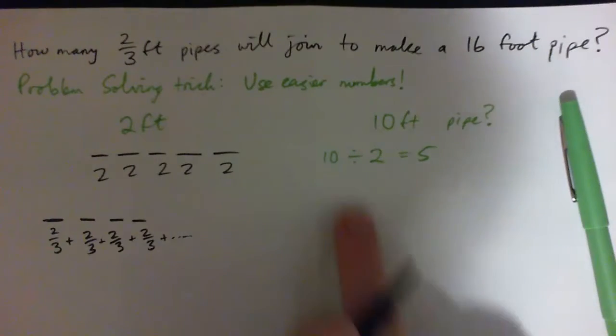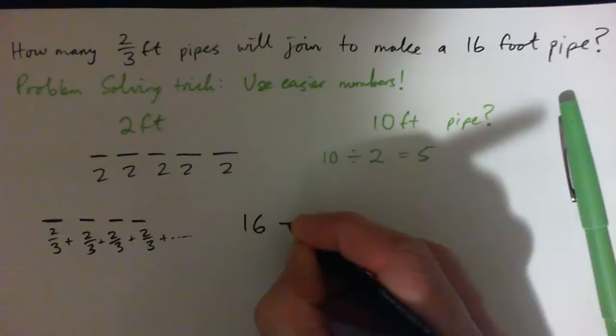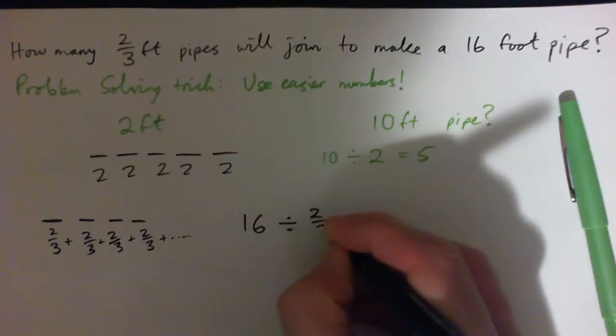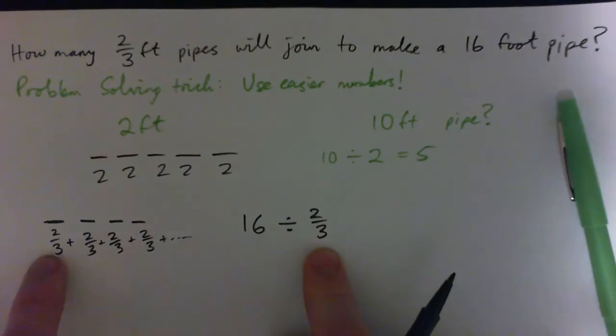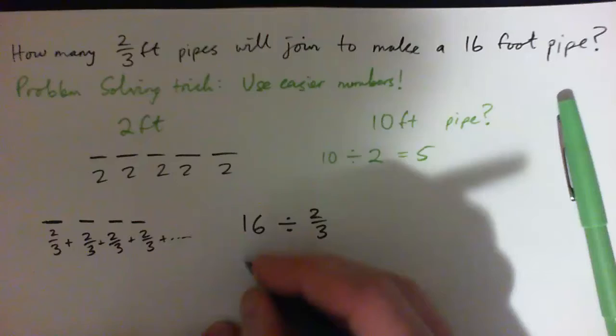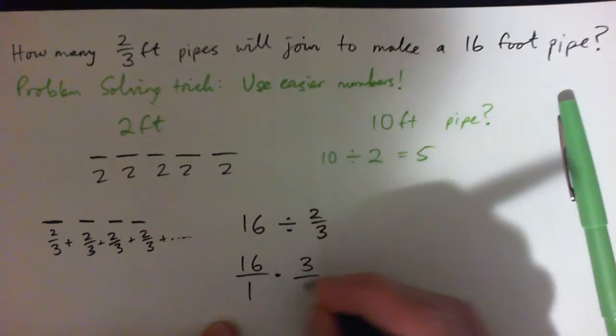So I've got a two-thirds foot pipe and a 16-foot pipe. Just do the same operation that you did with your easier number. So 16 divided by two-thirds. It's actually saying: how many two-thirds are contained in 16? That's what division is. How many two-thirds do I need to add up to get to 16?